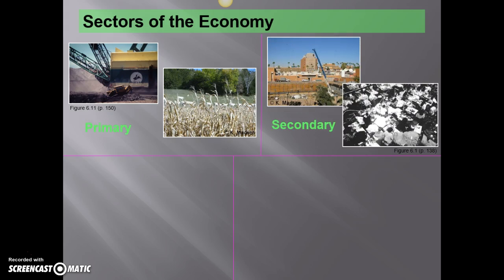Secondary economic activities involve taking all of that stuff that we pulled out of the earth, or that we made from the earth, and turning it into manufactured goods of some sort. We're altering it, changing it, making it for the market. Think of this as manufacturing — it's really secondary economic activity.